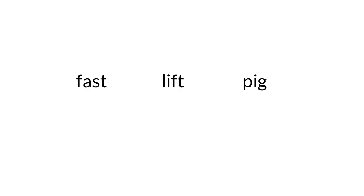Okay, now let's read these words together. First let's identify the vowels. In the first word, A is a vowel. I is a vowel, and I is a vowel. Now let's take a look at the consonants. Can you see any two consonants next to each other? The S and the T. We need to blend the sound of S and T together: F-A-S-T. Fast.